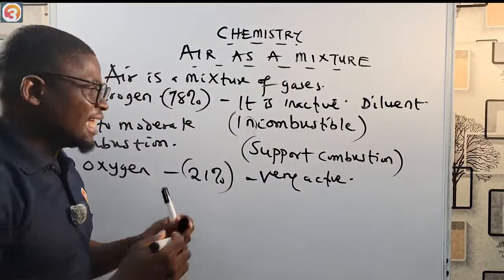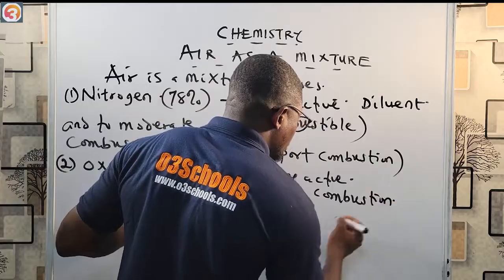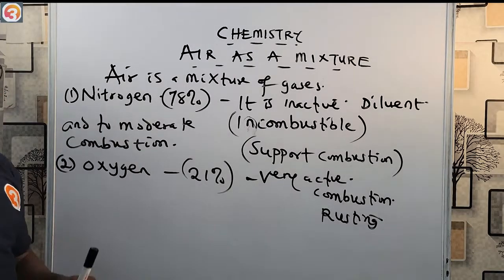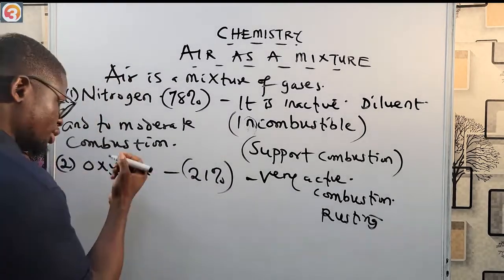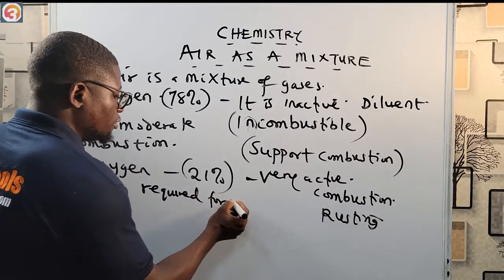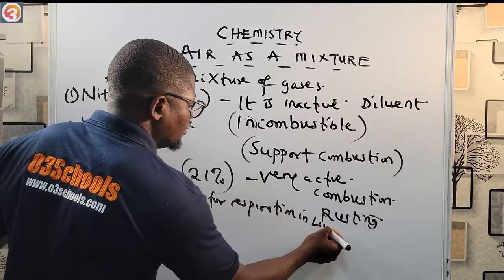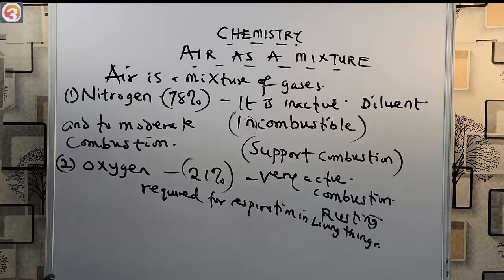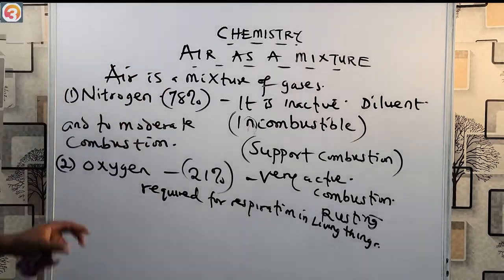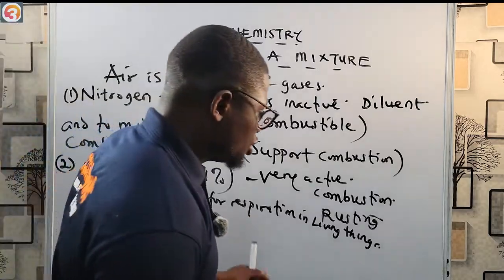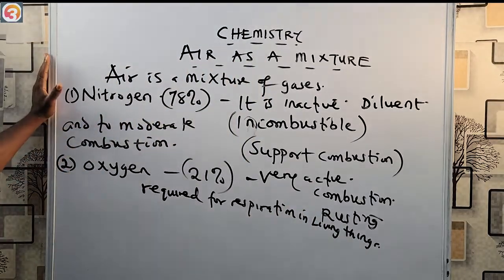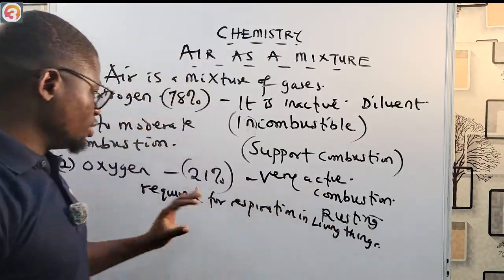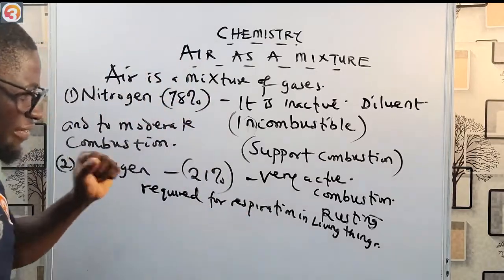Oxygen is very active. It supports processes like combustion and rusting, and is required for respiration in living things. It is also produced by photosynthesis by plants. So if you see a question like: which component of air supports combustion? — the answer is oxygen. Which component does not support combustion? — that would be nitrogen or carbon dioxide.